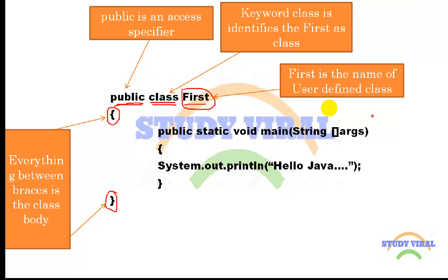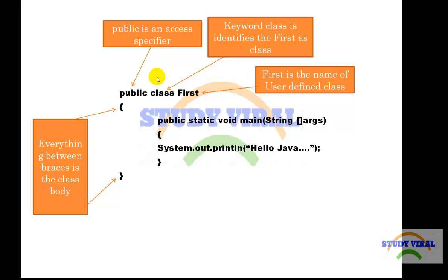These curly brackets are the block of this class. It means that anything declared inside this block is a part of this 'First' class. This is the simple structure of a Java class. In the next slide I am going to talk about public static void main.